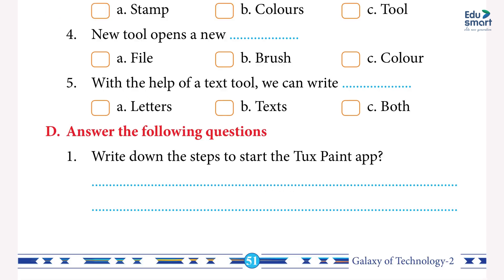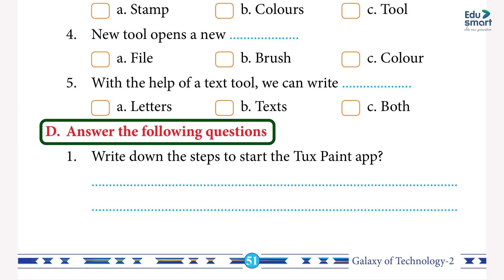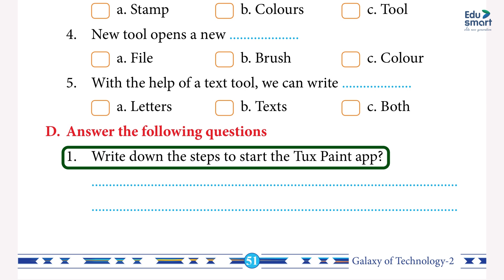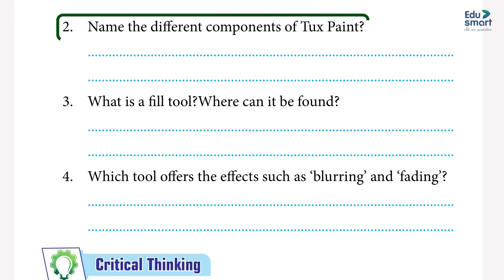5. With the help of a text tool we can write letters — answer: a) Letters. D: Answer the following questions: 1. Steps to start the Tux Paint app — Step 1: click on the Start button; Step 2: select All Programs; Step 3: click on the Tux Paint option, either full screen or window. 2. Name the different components of Tux Paint.